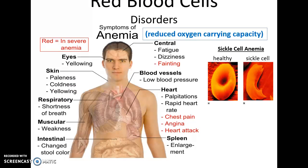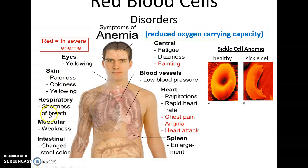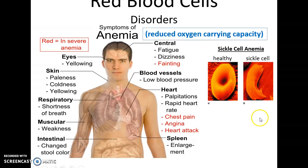Disorders: Anemia is a reduced oxygen-carrying capacity, often caused by too few red blood cells. However, it could also be caused by not enough iron in the diet, meaning the hemoglobin would not be properly active. It leads to symptoms such as yellowing of the eyes, problems of the skin, shortness of breath, weakness, rapid heart rate, dizziness, low blood pressure, all the way up to heart attack, fainting, and death.